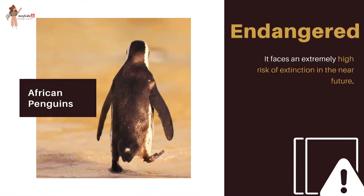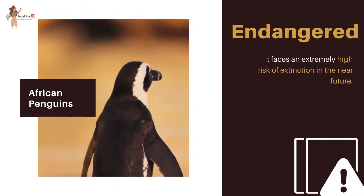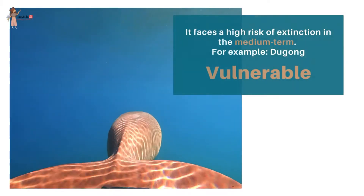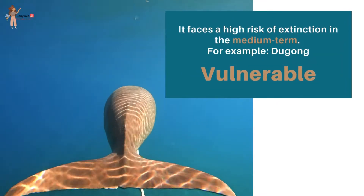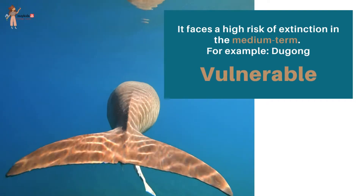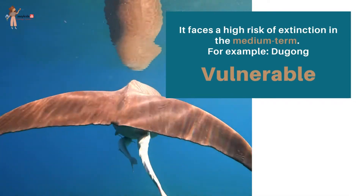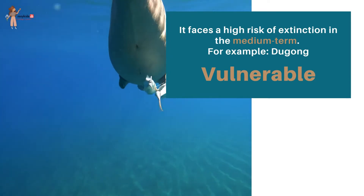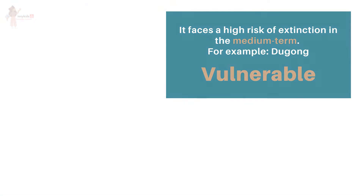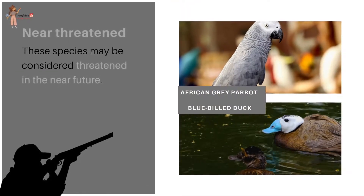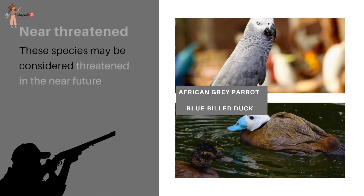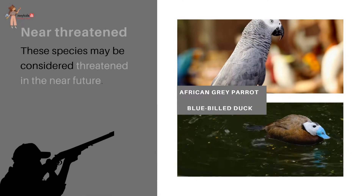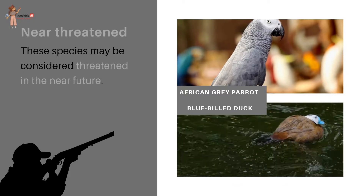Endangered means a species that faces an extremely high risk of extinction in the near future. Vulnerable is a species that faces a high risk of extinction in the medium term — for example, the dugong. Near threatened refers to species that may be considered threatened in the near future, like the African grey parrot and blue-billed duck.